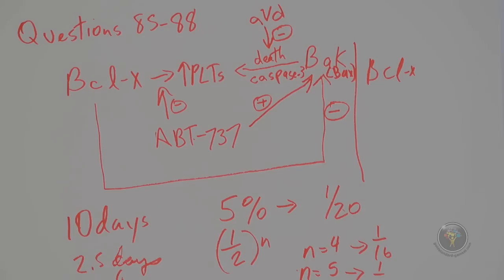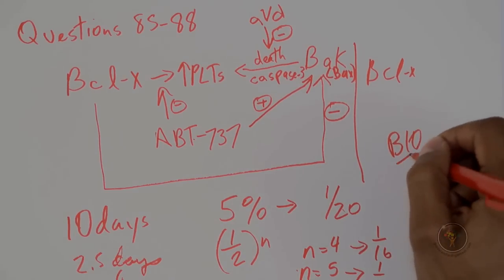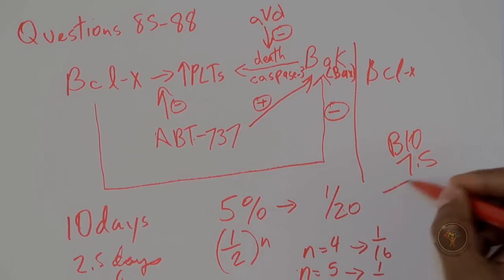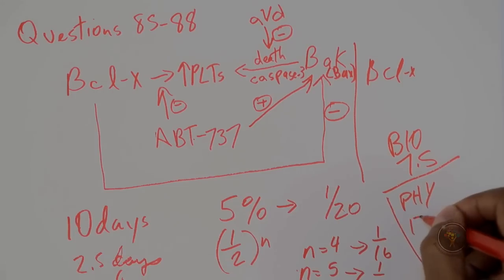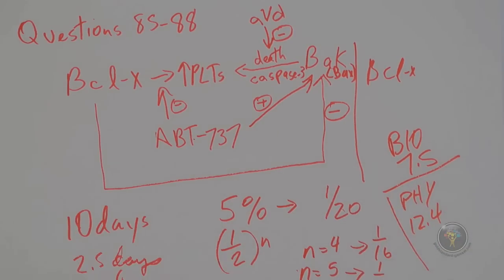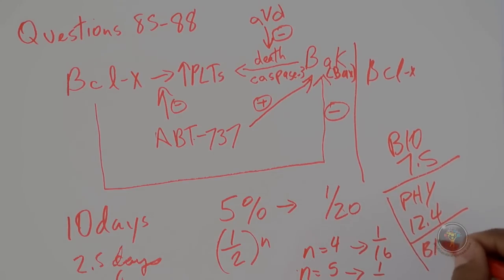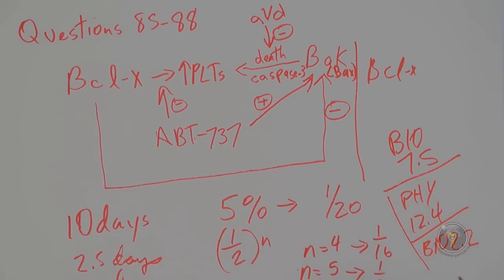To review further, helpful resources include information on blood composition and platelets, half-life from physics, and prokaryotes and doubling time, which use similar equations.